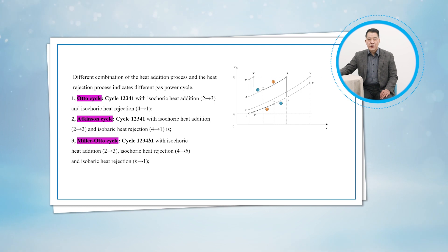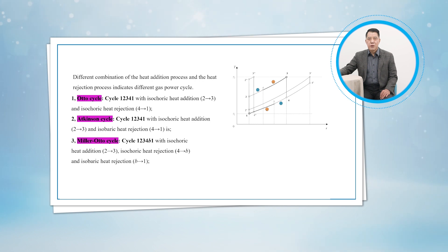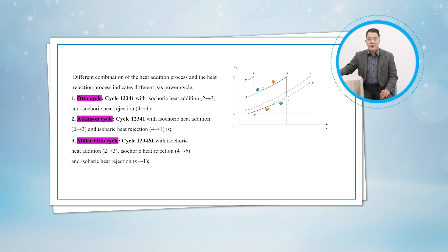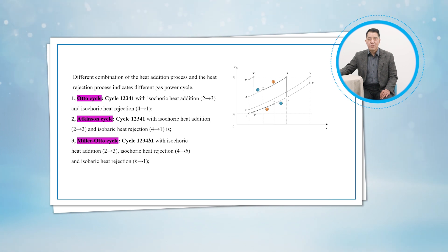The third one: when cycle 1-2-3-4-1 is with isochoric heat addition, and both isochoric and isobaric heat rejection, this means in figure 10-38 state A is merged with state 3, and the Atkinson cycle is the cycle 1-2-3-4-B-1.